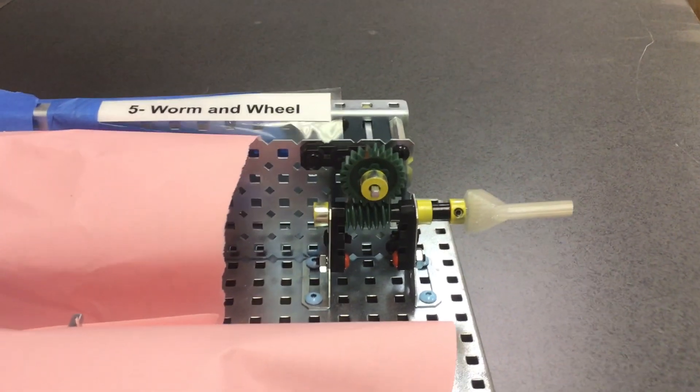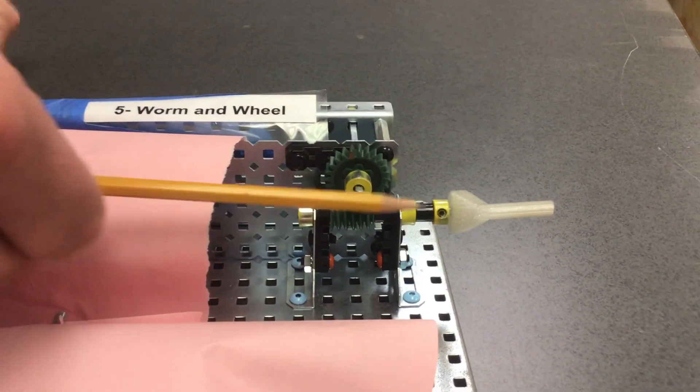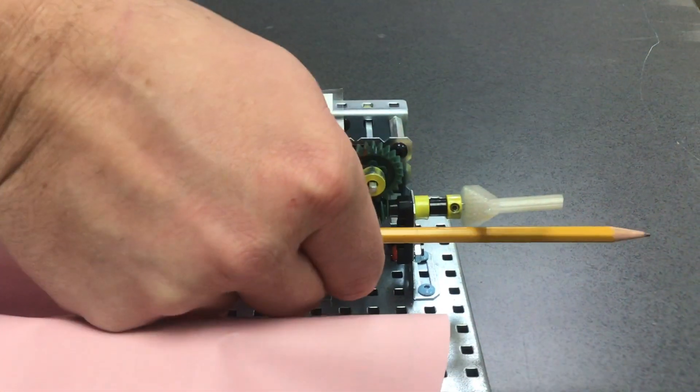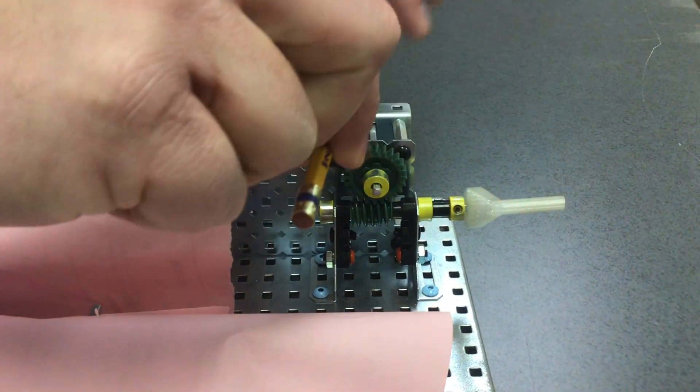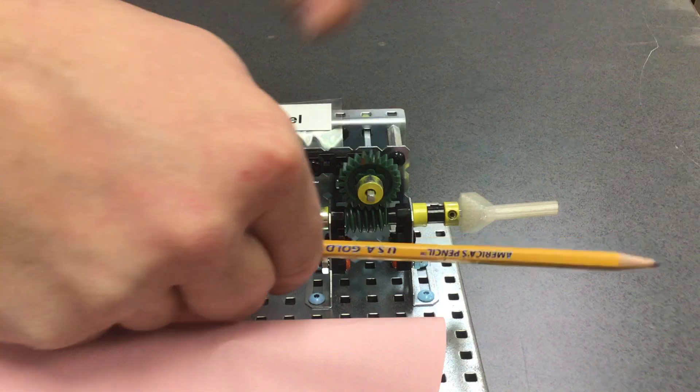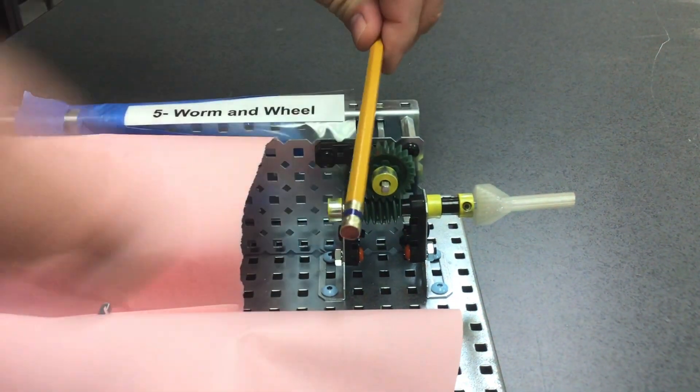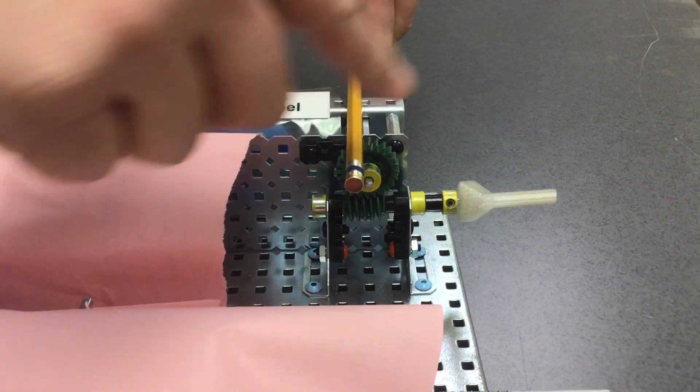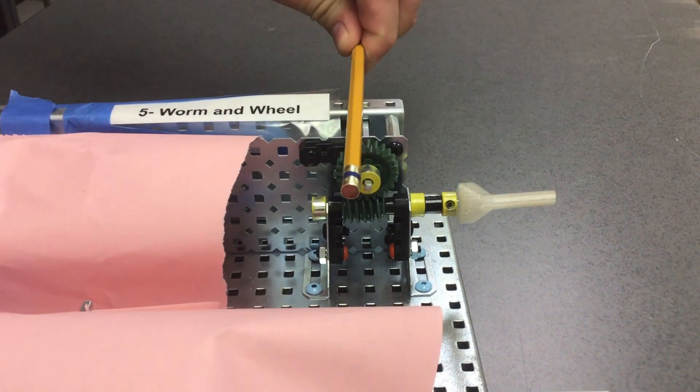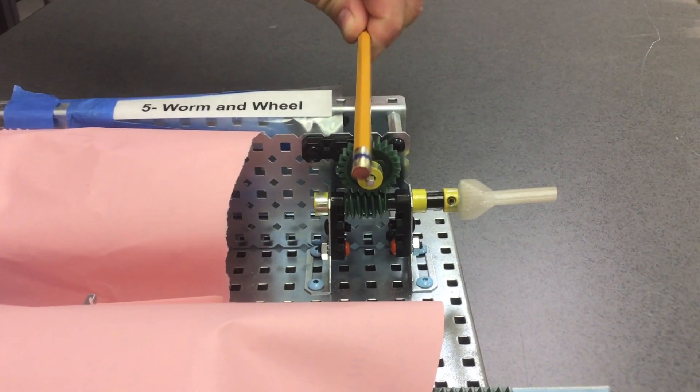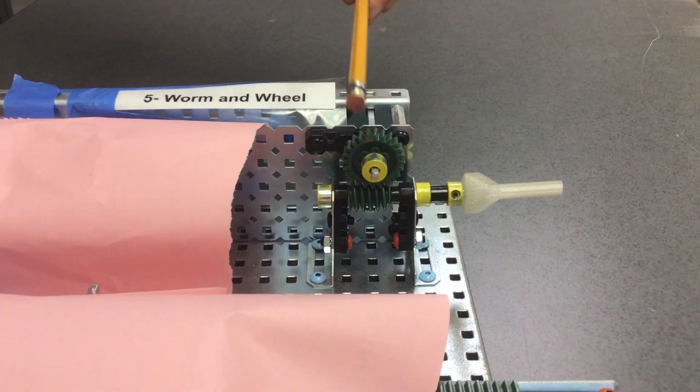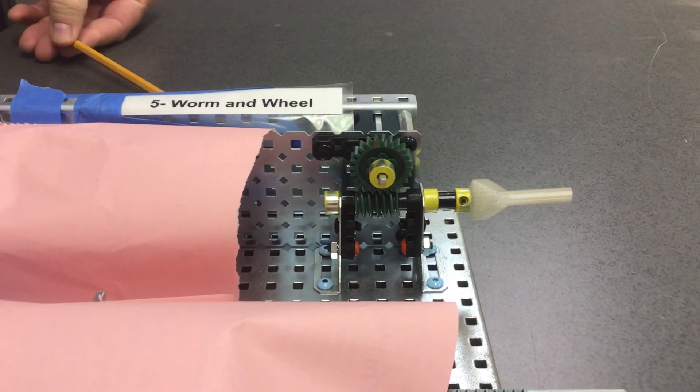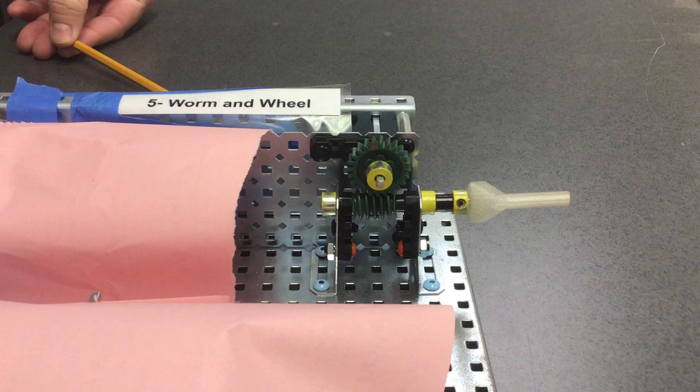Let's talk through the worm and wheel. First let's notice the angle. This shaft is going in this direction and the input shaft is going in this direction and the output shaft is going in this direction. Those are crisscrossing each other and in fact it goes on top of, intersecting at 90 degrees.